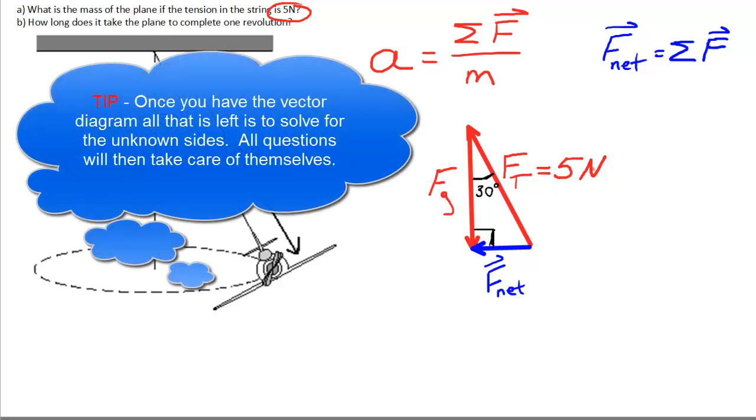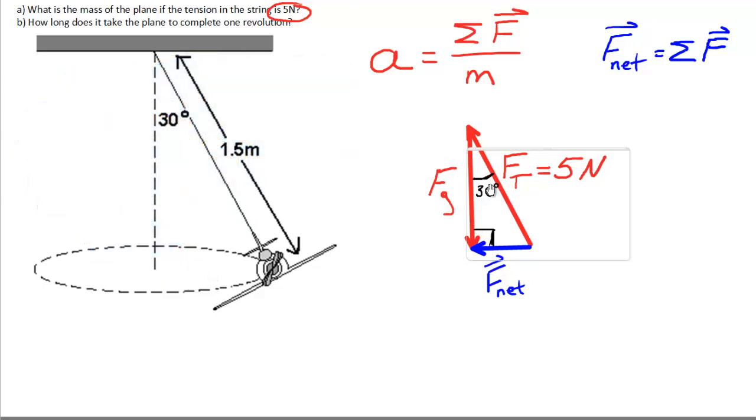Well, I've got an angle, I've got a hypotenuse of 5 newtons. F_g, according to my triangle, is the adjacent side. You can see here that F_g on this side right here is adjacent to my angle of 30 degrees. So I'm going to use cosine. So cosine 30 is adjacent F_g over my tension.